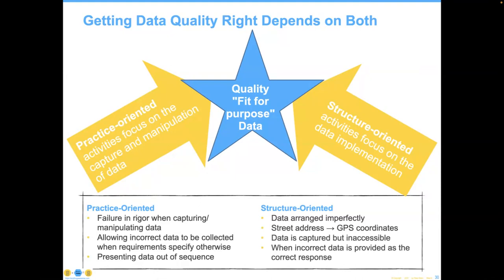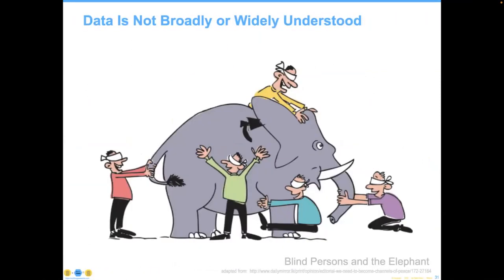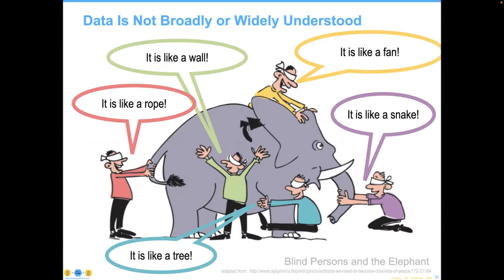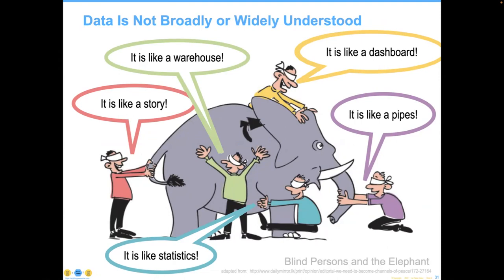Another example: your data is organized by street address when you really need GPS coordinates, or your data is captured but not accessible — that happens regularly in large data warehouse environments. Or when incorrect data is provided in response to a correct query — I had a group using a Likert scale where the data should have been between 1 and 5, and they got an average of 7. If my range is 1 to 5, I cannot get an average of 7, but the computer was giving it to them and they said, 'It must be right because computers are smarter than us.' One reason we're in this situation is that data is not broadly or widely understood — it's like the blind people facing the elephant, each touching a different part and coming away with a different perspective.